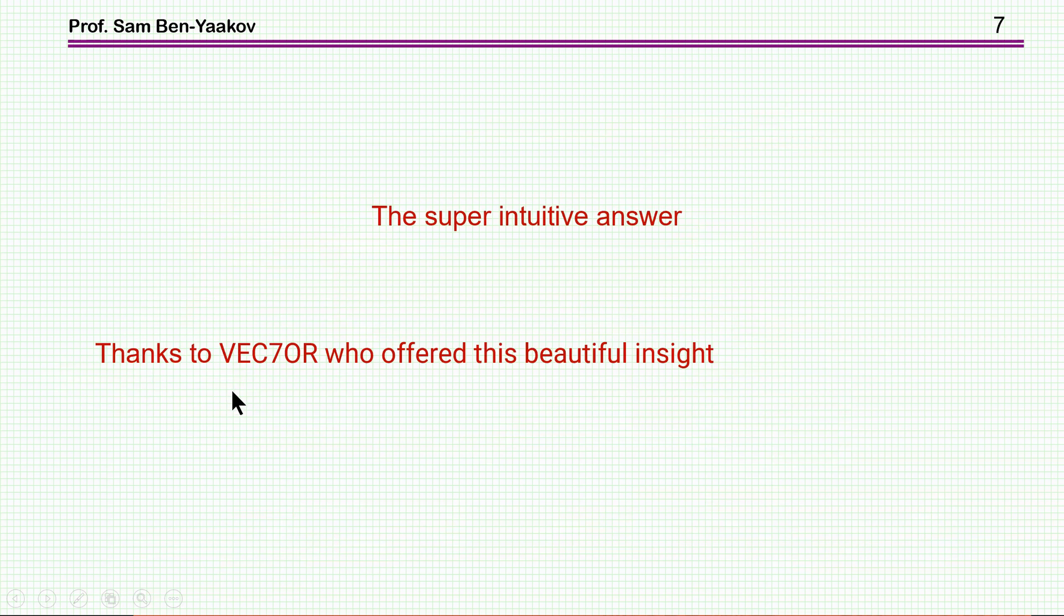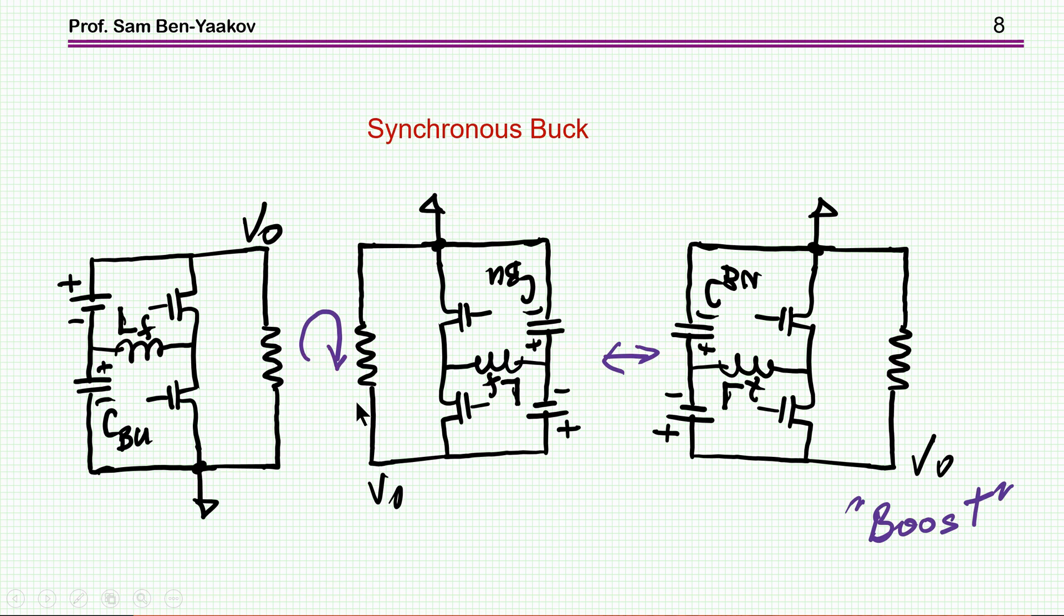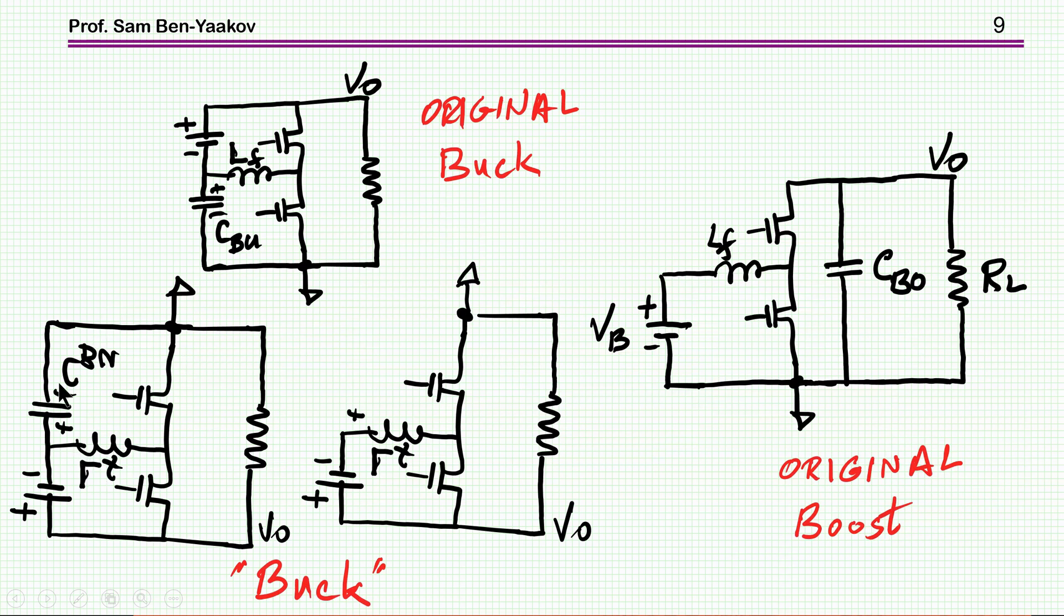Now there is a super intuitive answer, I'm calling it, and it was offered by one of the viewers of the YouTube video that I've posted. And here it is, which is kind of very tricky. And the idea is the following. If we take the buck solution and we turn it over, once you do that, you get, of course, ground here and plus here, but doesn't matter as far as the functionality goes. And then I flip it right and left, and I end up with this configuration.